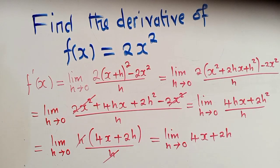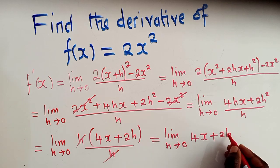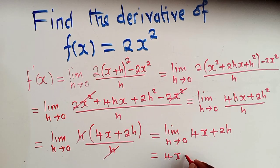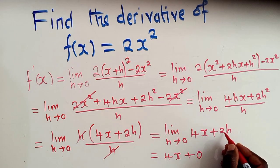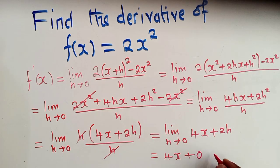So now with limits, we're going to substitute this 0 now. We put it right here. So we shall have 4x plus 0. Because when we put a 0 here or we substitute a 0, we just get a 0. And our answer will just be 4x.